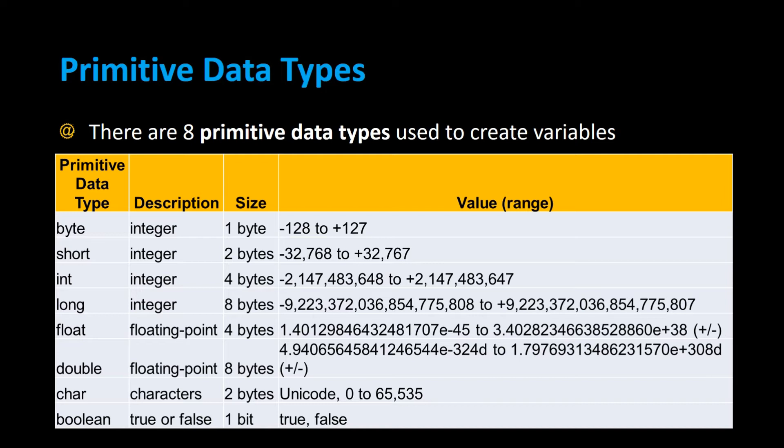And finally, there's boolean. If you declare a variable as a boolean, it can only have two possible values: true or false.